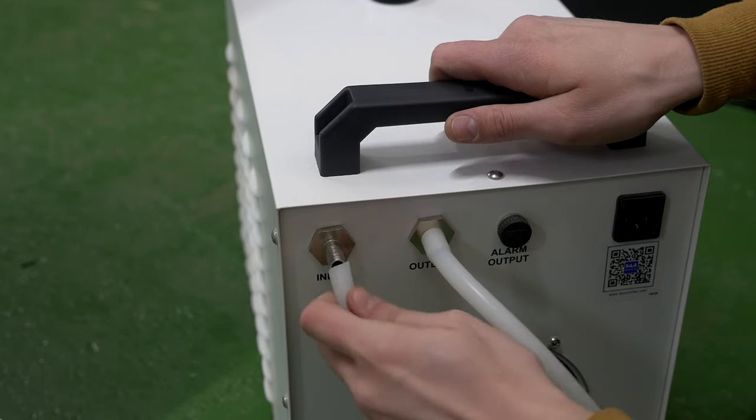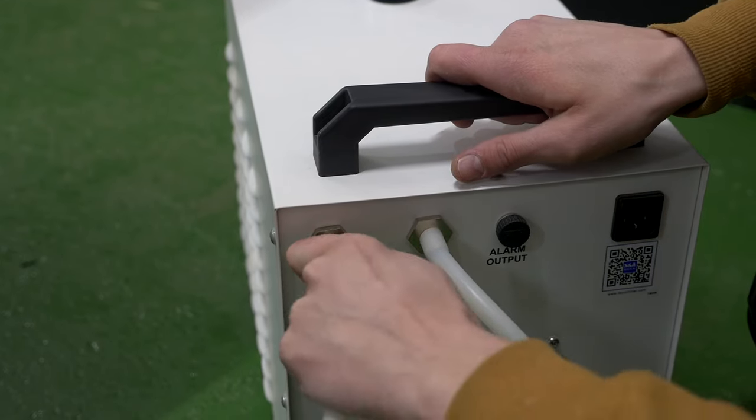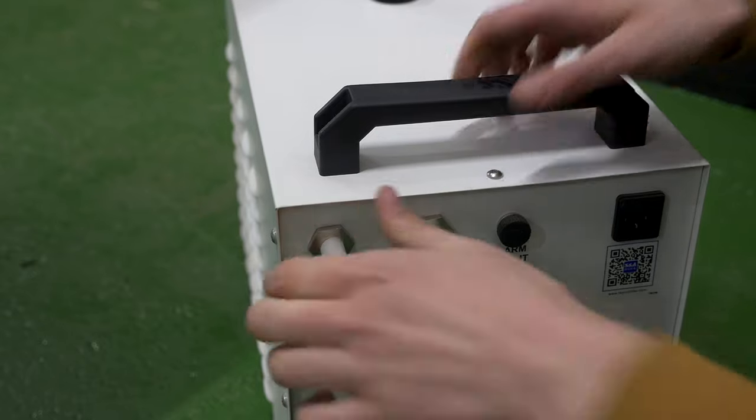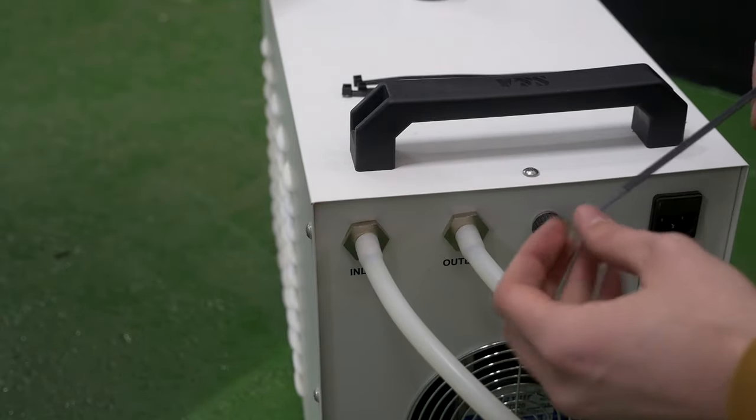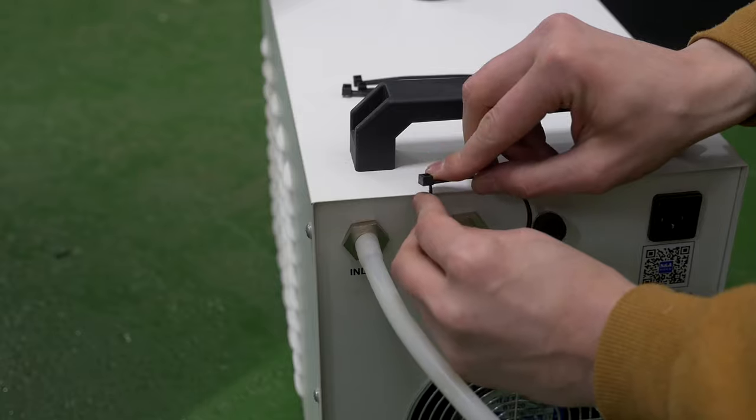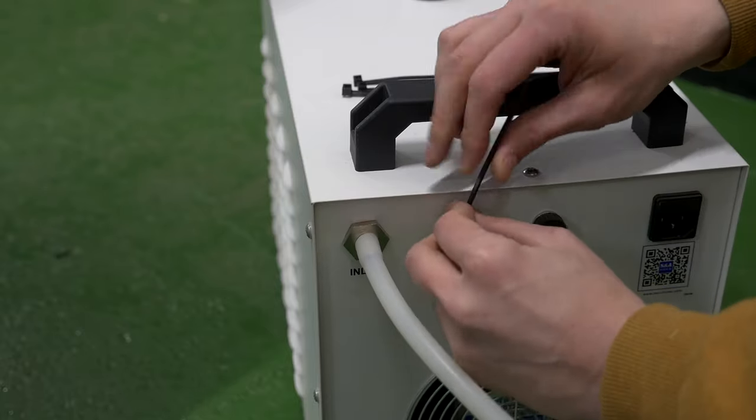You should connect them to the chiller in reverse. The machine's outlet goes to the chiller's inlet and vice versa. Connect hoses and fasten with clamps.